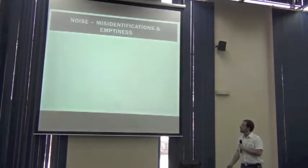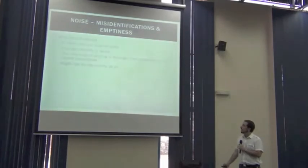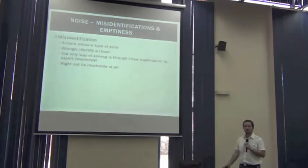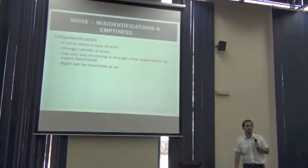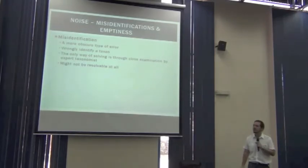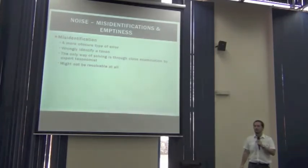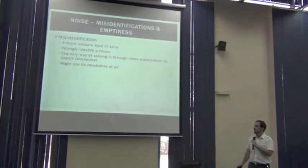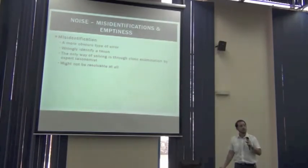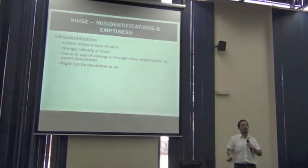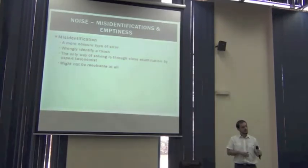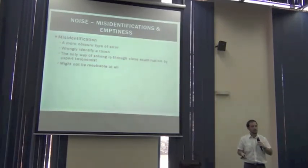Another issue is misidentifications, which are a more obscure type of problem because most of the time there is no way to know if an identification is right or wrong. Remember the different types of occurrences — we have specimens and field observations.